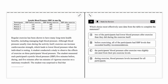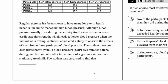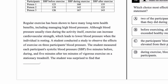Let's get into it with this particular example. Our first step: data to complete the statement. Reading the passage: 'Regular exercise has been shown to have many long-term health benefits, including managing high blood pressure. Although blood pressure usually rises during the activity itself, exercise can increase cardiovascular strength, which leads to lower blood pressure when the individual is resting. A student conducted a study to observe the effects of exercise on three participants' blood pressure.' So the key variables here are exercise and blood pressure — specifically the effect of exercise on blood pressure.